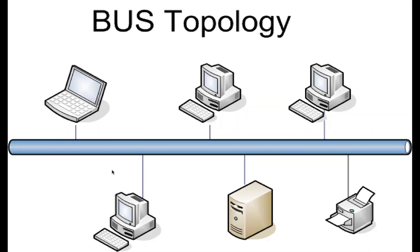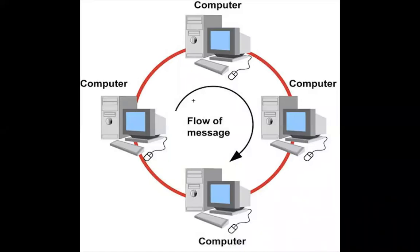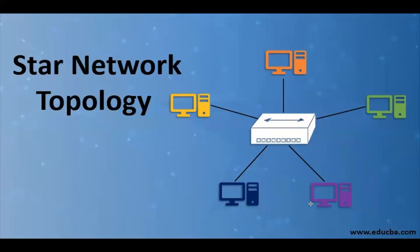Each topology is best in a specific situation. It depends on the type of network your organization wants. You sit down and assess it - decide whether to use bus, ring, or star topology. We have three main types: the bus, the ring, and the star topology. The one you prefer depends on your situation as the designer.